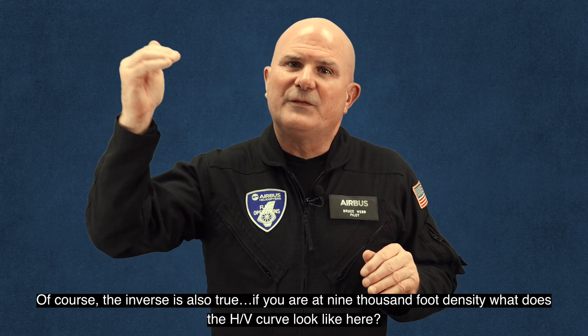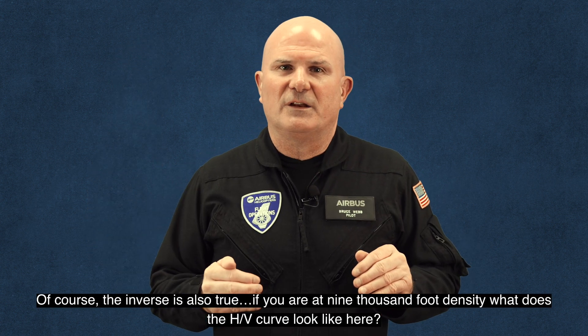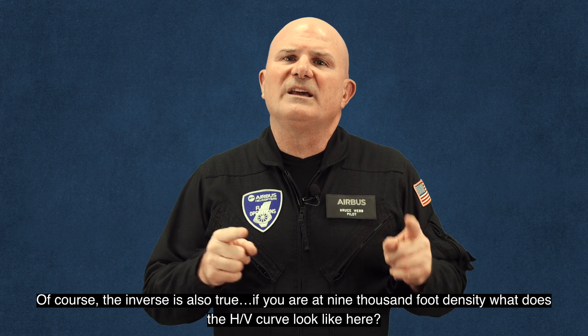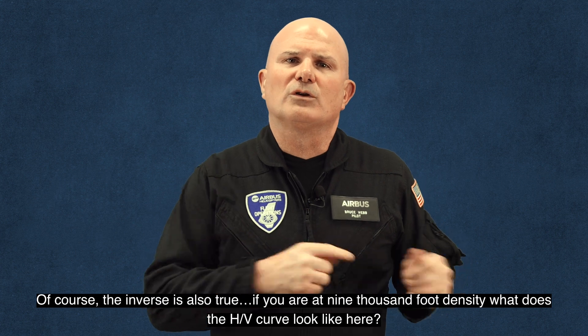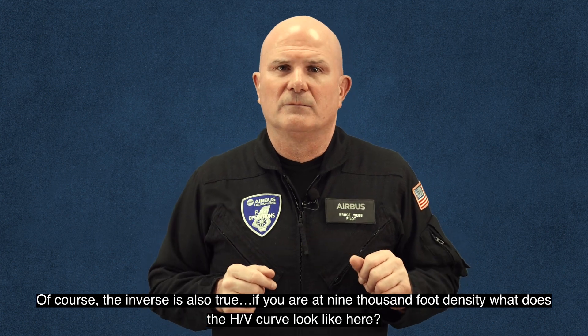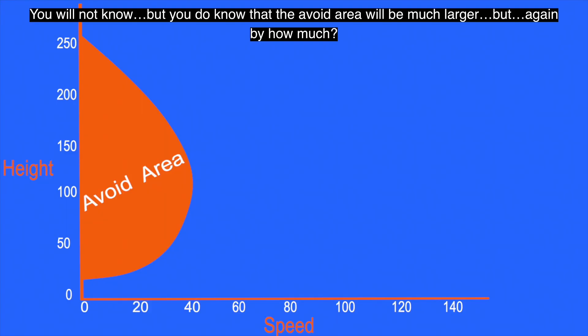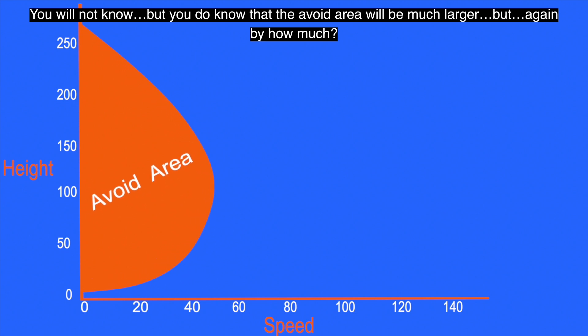If you are at 9,000 foot density altitude, what does the HV curve look like here? You will not know. But you do know that the avoid area will be much larger. But again, by how much?